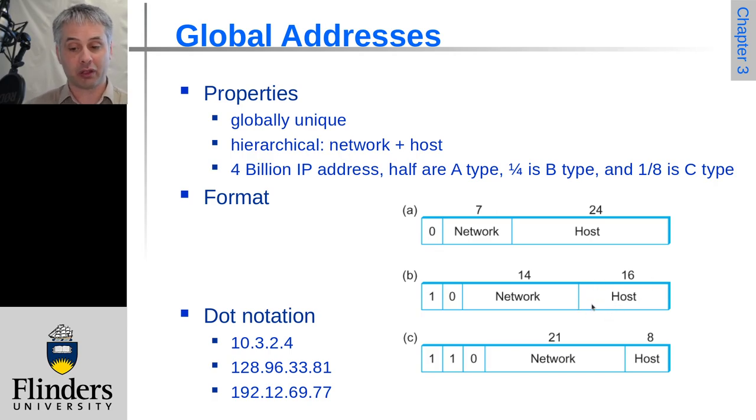So it can have 2 to the power of 16 is 65,536 hosts in principle. And in the class A, you've got 24 bits of host, you can have over 16 million hosts in there.